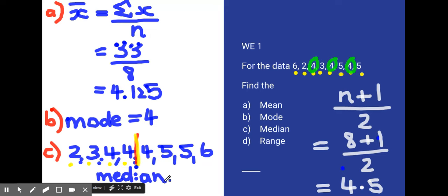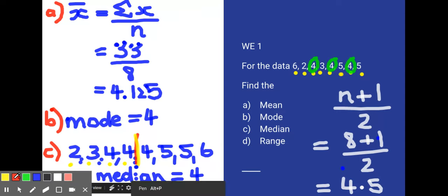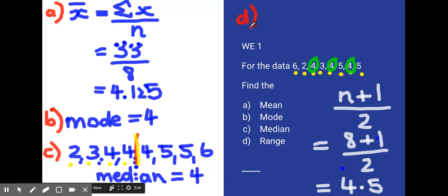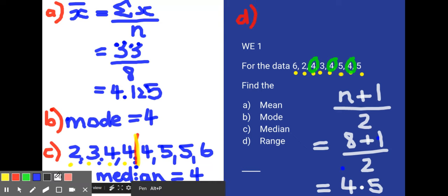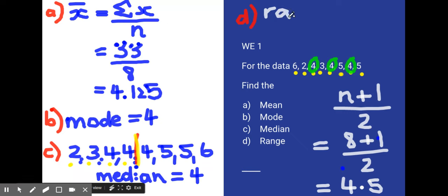Remember, if those two numbers weren't the same, we'd add them up and divide by 2. The range is simply the maximum, which is 6, minus the minimum, which is 2, leaving us with 4.